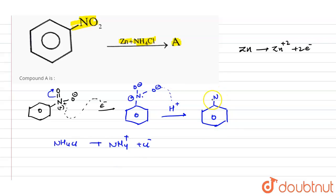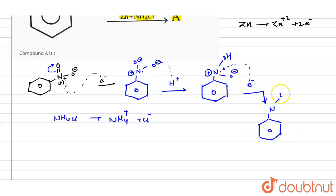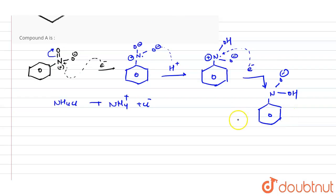So now we have nitrogen with a radical and a positive charge, and the oxygen has been converted to OH. In the next step, one more electron comes to the nitrogen, neutralizing the radical — the lone pair forms, and the positive and negative charges cancel. The compound is converted into a neutral form: nitrogen with NH and OH.